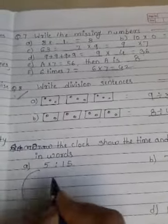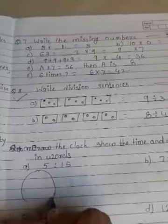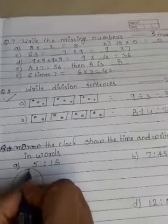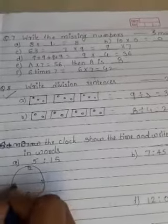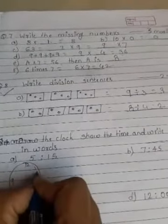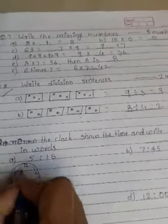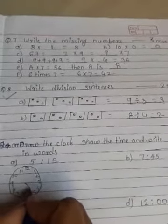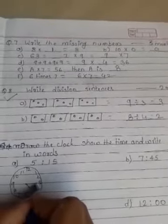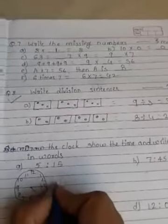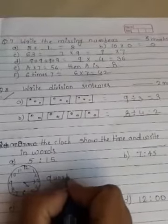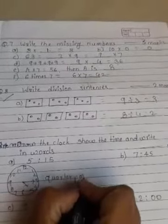Draw the clock, show the time, and write in words. First, draw the clock with twelve, six, three, nine, and all the numbers. Five fifteen: small hand on five, big hand on three. Write in words: quarter past five.